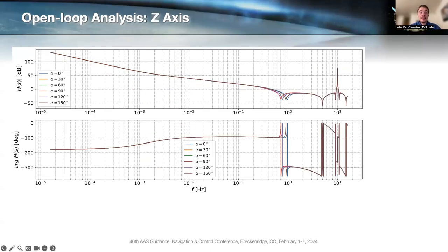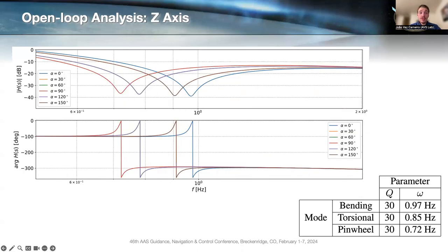Finally, for the Z-axis, the response is actually quite similar. If we zoom in, the only difference is that at zero degrees, we're not exciting the pinwheel mode. We're actually exciting the bending mode because the panel at zero degrees is completely perpendicular to Z. Then at 90 degrees, the panel is facing Z, so we're actually exciting the pinwheel mode instead.